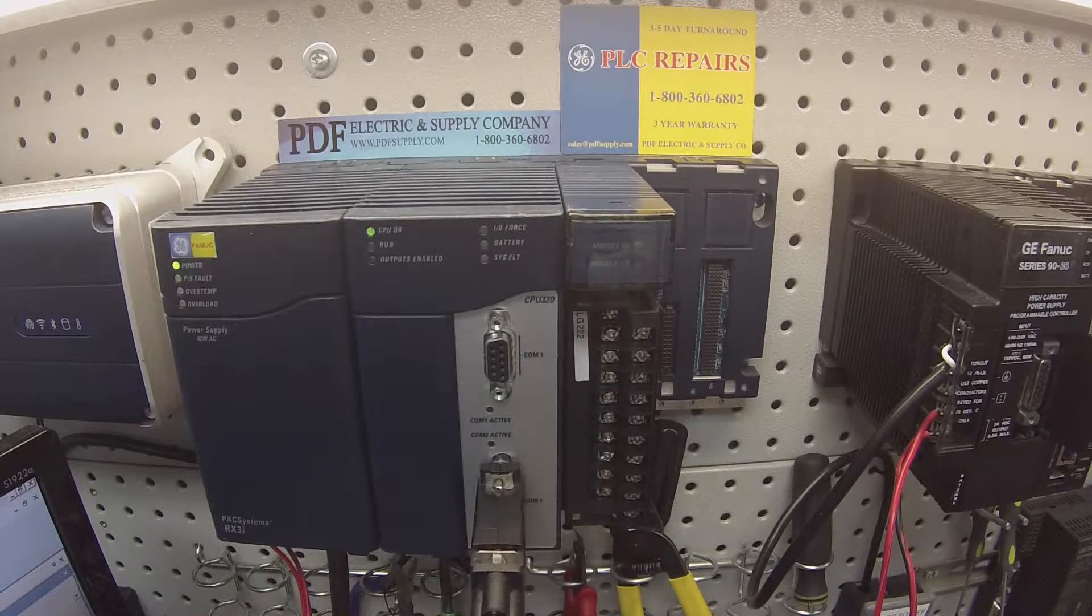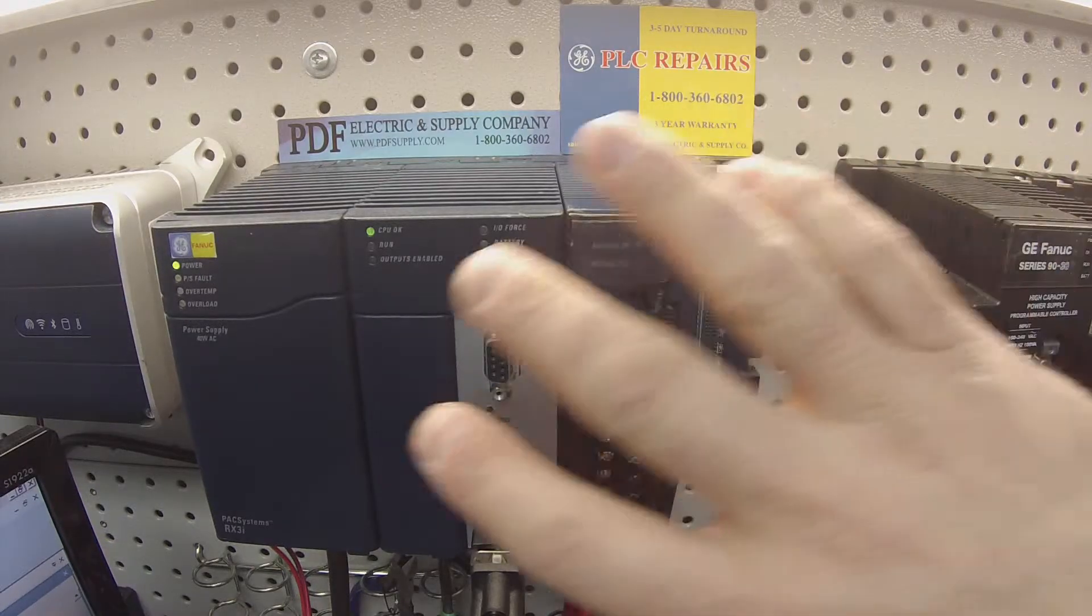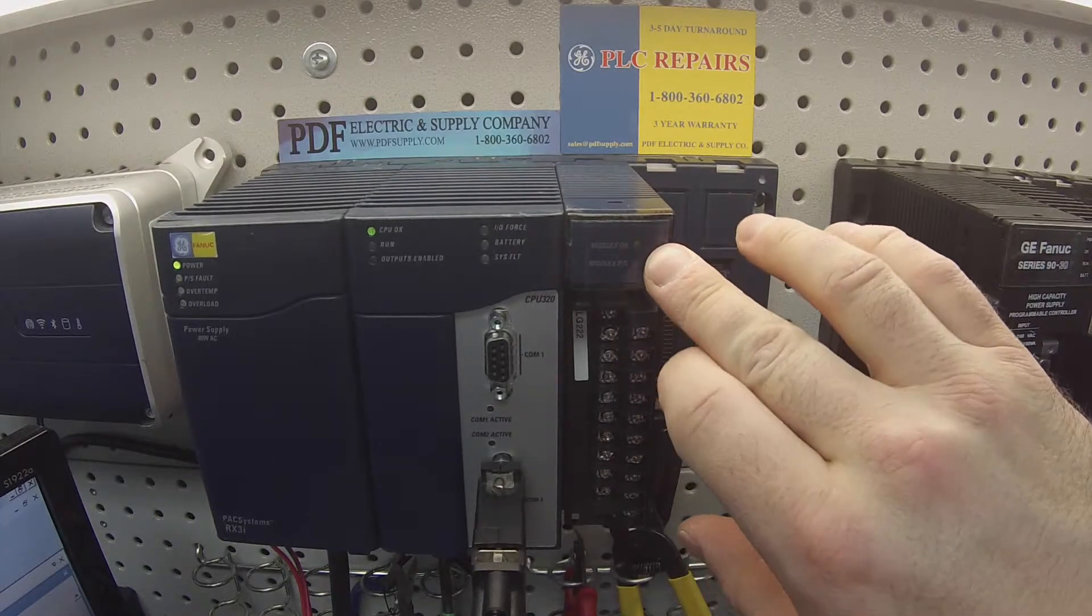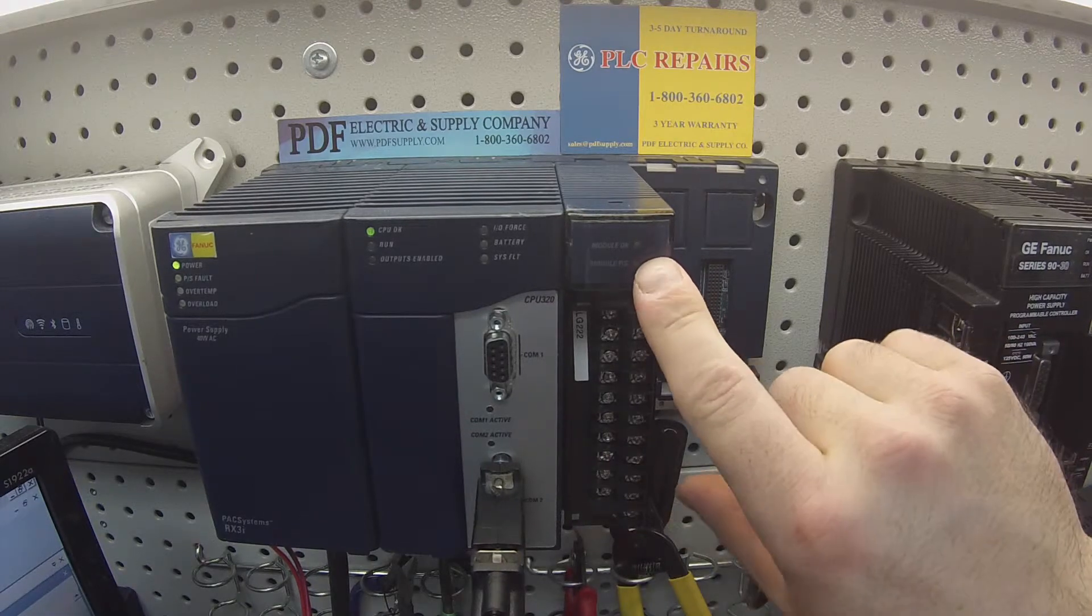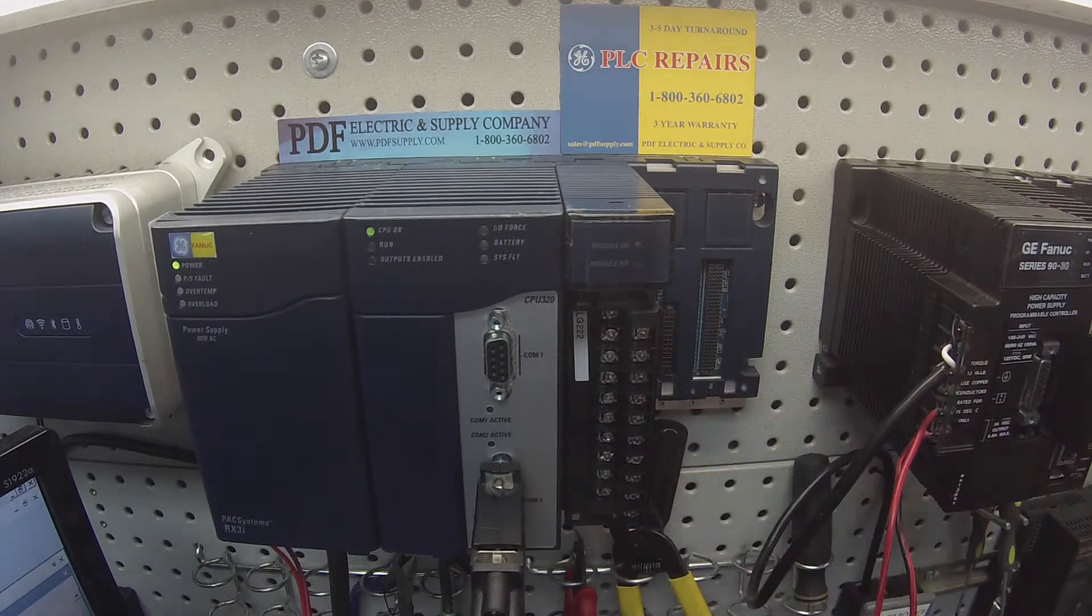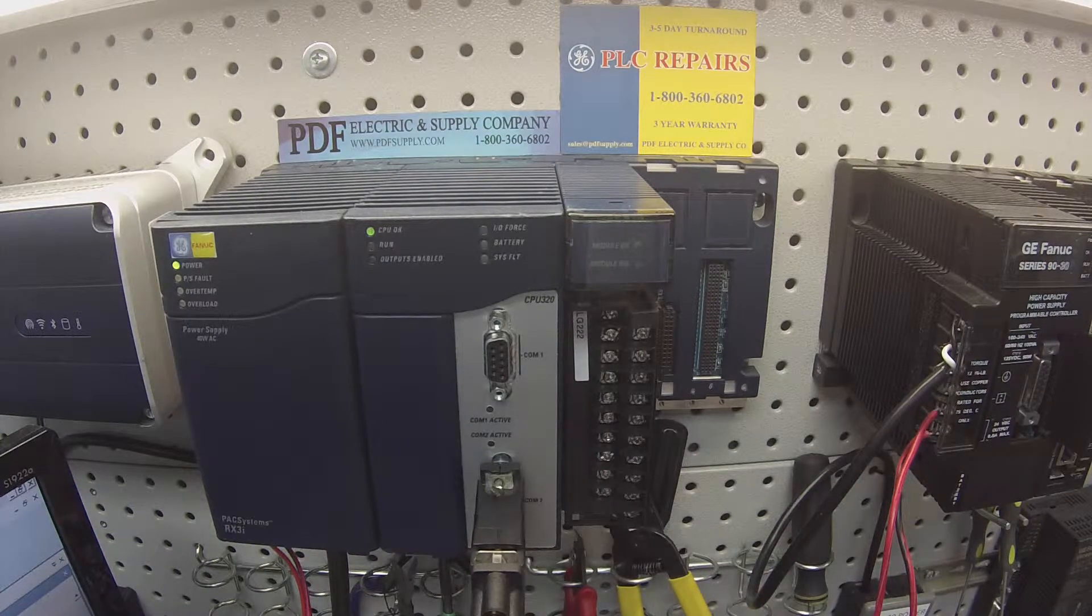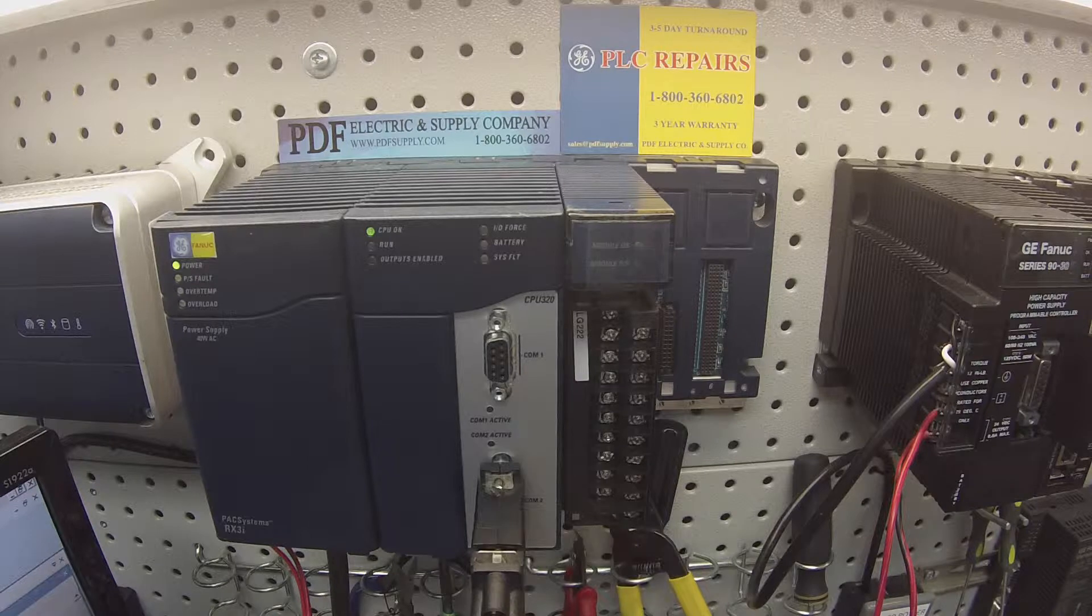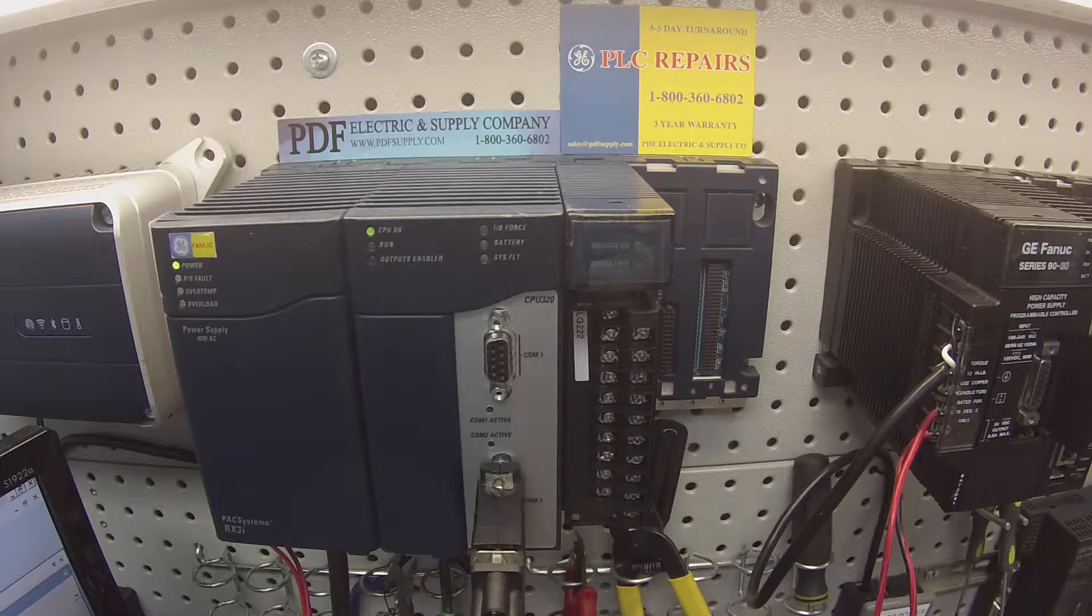A couple things about this card: when you have the system powered up the way you see it here, you should have a module OK light on. When it goes through the self diagnostic, it should be green here or at least blinking green. If you don't have any light on, that means there's some sort of problem with the card and you'll need to either replace it or repair it.